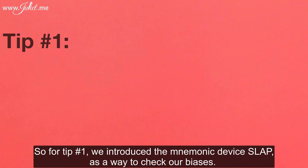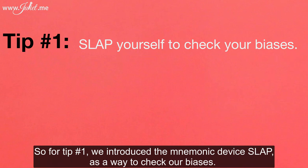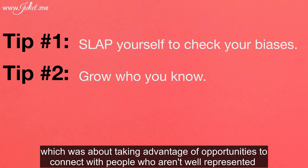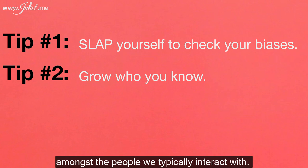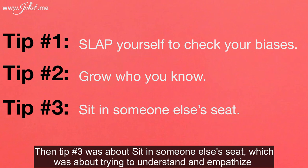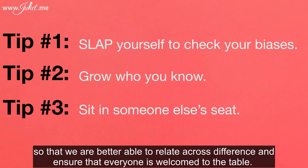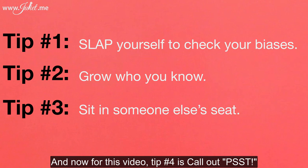For tip number one, we introduced the mnemonic device SLAP as a way to check our biases. For the second tip, we explored the concept of 'Grow Who You Know,' which was about taking advantage of opportunities to connect with people who aren't well represented amongst the people we typically interact with. Then tip number three was 'Sit in Someone Else's Seat,' about trying to understand and empathize with the perspective and experience of others so that we are better able to relate across difference.